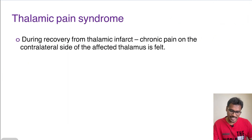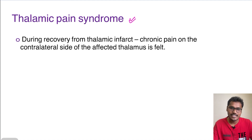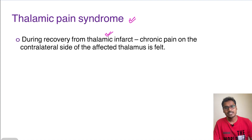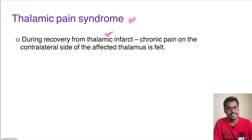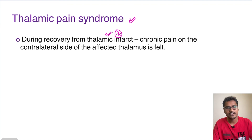An important clinical aspect is thalamic pain syndrome. Since most pain fibers pass through the thalamus, when there is an infarction of the thalamus, the pain sensation is initially completely lost. However, during the recovery period from the thalamic infarct, the patient feels chronic severe pain on the contralateral side of the body. This is called thalamic pain syndrome, also known as post-infarct pain syndrome, because it occurs during the recovery phase — not immediately after the infarct.